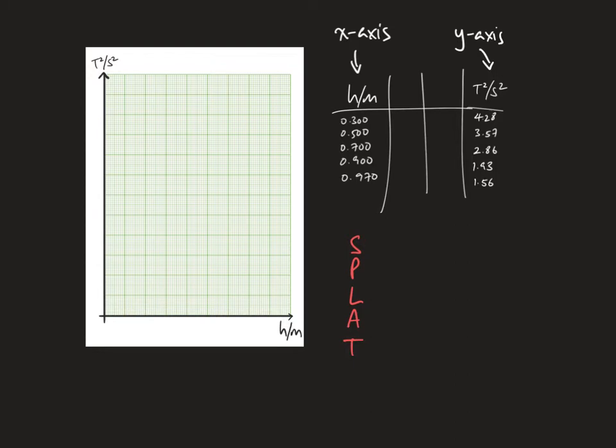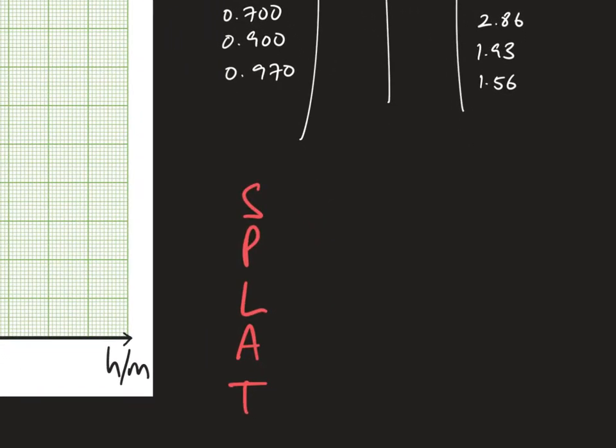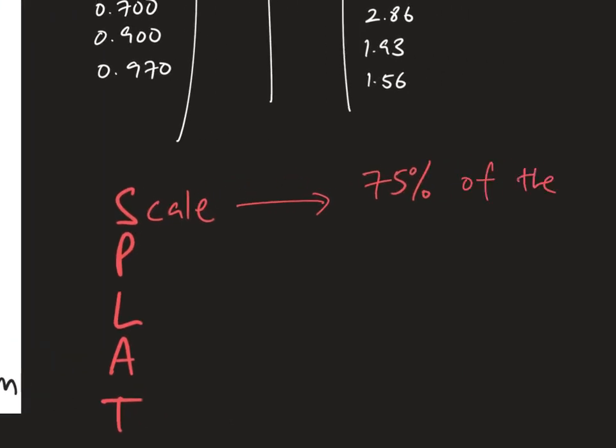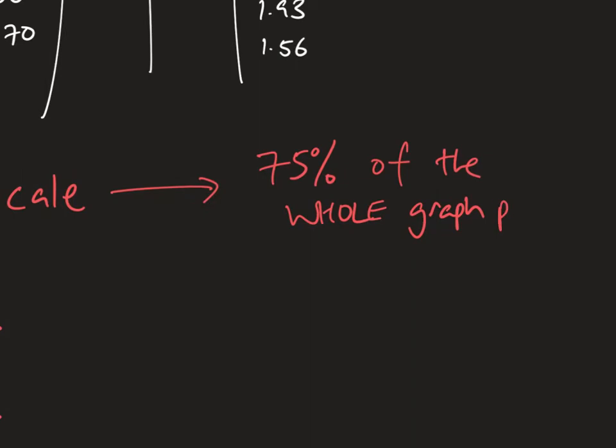The next step that we want to do is to find an appropriate scale. That is exactly what the S in SPLAT stands for. SPLAT is an acronym that you use to know and evaluate your graph. Scale. How do we pick an appropriate scale? We want it to be a good scale such that your eventual graph will take up about 75% of the whole graph paper.